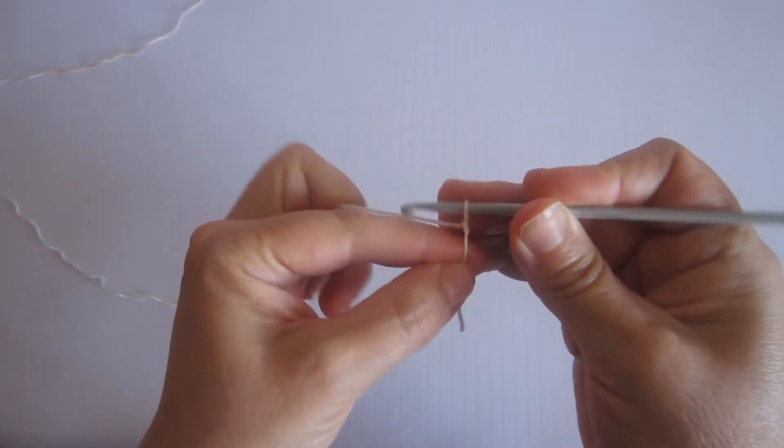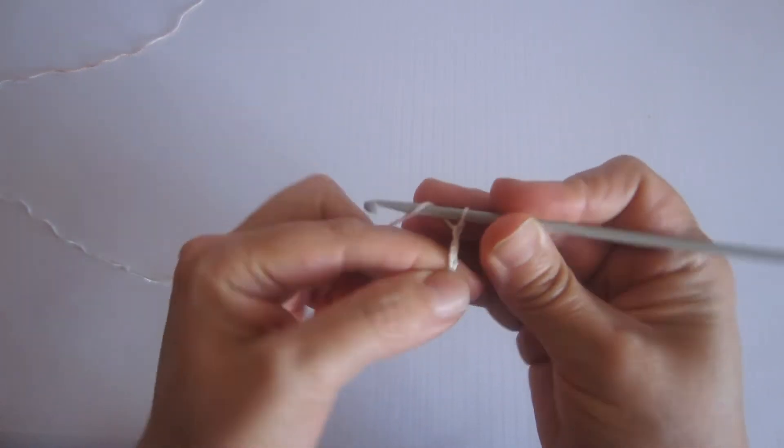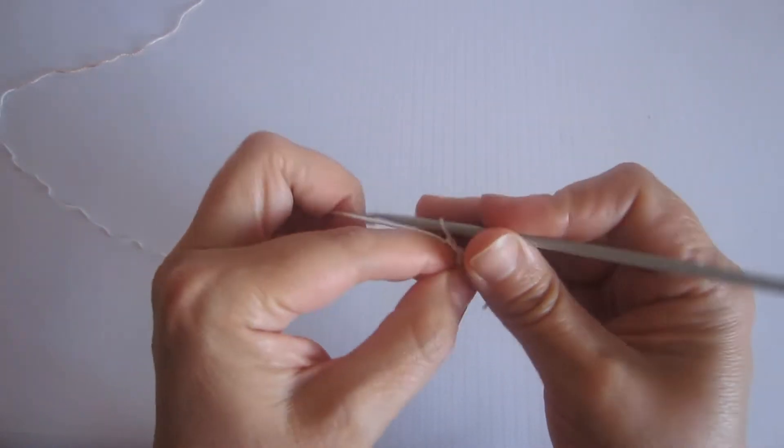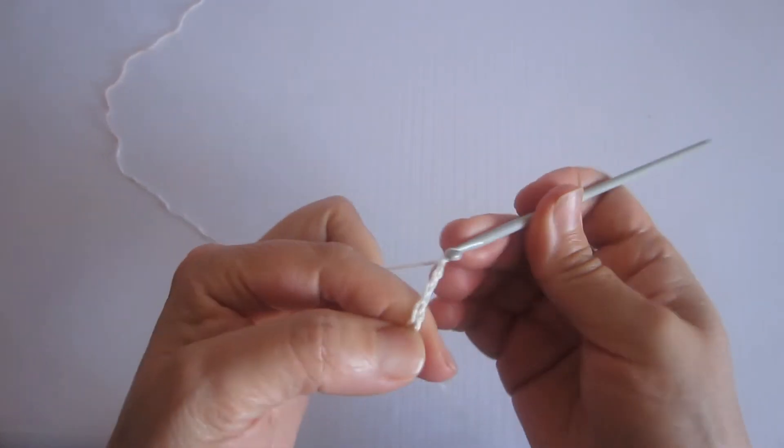Este es el primer nudo que no cuenta y tejemos 10 cadenitas. 1, 2, 3, 4, 5, 6, 7, 8, 9, 10.